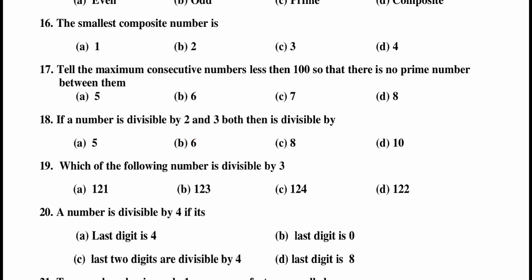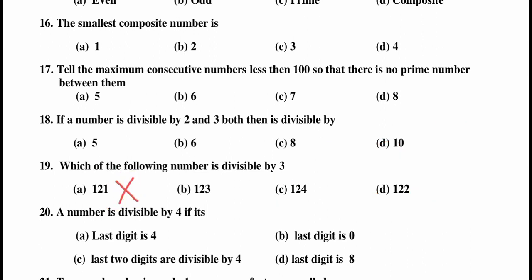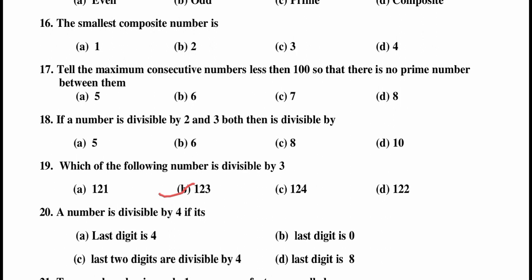Question 19: which of the following numbers is divisible by 3? The divisibility rule of 3: if the sum of all digits is divisible by 3, then the number is divisible by 3. For 123: 1 plus 2 is 3, plus 3 is 6, and 6 is divisible by 3. So 123 is divisible by 3.